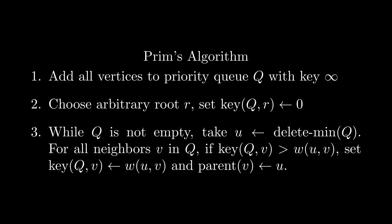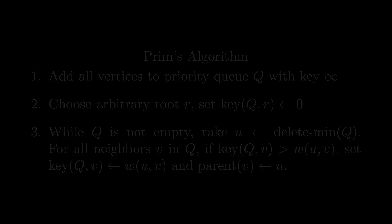While the priority queue is non-empty, we then delete-min of Q, taking the popped vertex u and updating the weight of all adjacent vertices still in Q, v, to be min of the current key[Q, v] and w(u, v), where w is the weighting function. If we end up updating the key at this step, we set parent[v] to be u. Here's an example of this algorithm in action.